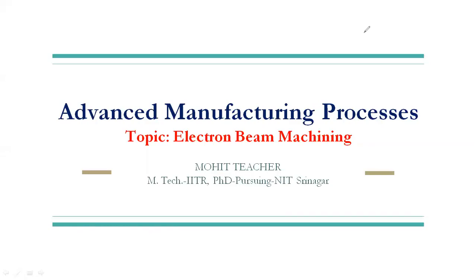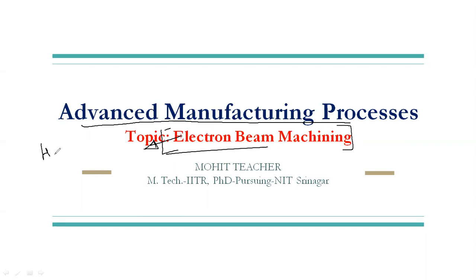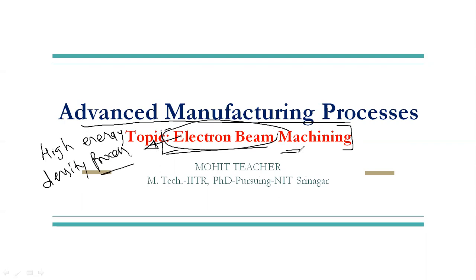Welcome everyone. In this video we are going to discuss about one of the advanced manufacturing processes — Electron Beam Machining. In this process we also call it a high energy density process because we are using the electron beam for machining purposes, and the electron beam has a very high energy density.